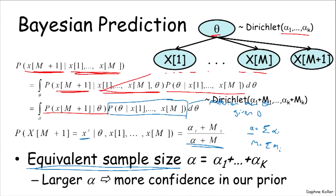And so the larger the alpha, the more confidence we have in our prior, and the less we let our data move us away from that prior.